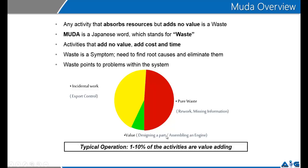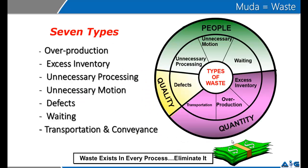Lean practitioners all across the world are of the view that if you were to evaluate a business process not having been evaluated for waste, you would typically find between 1–10% of all activities useful and the rest being waste. There are seven types of wastes popularly outlined in the industry: overproduction, excess inventory, unnecessary processing, unnecessary motion, defects, waiting, and transportation and conveyance. One must identify waste in every business process and look at eliminating them.